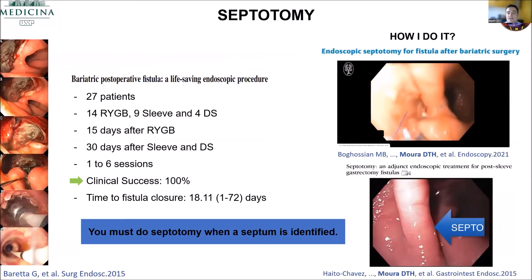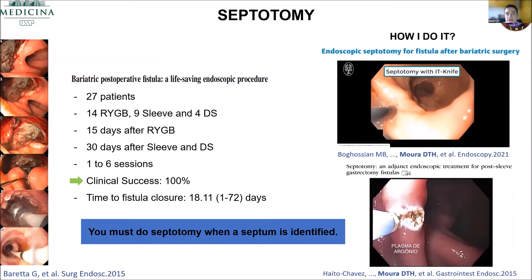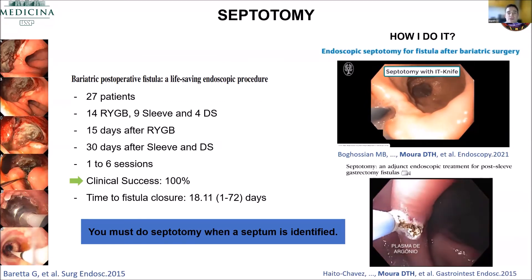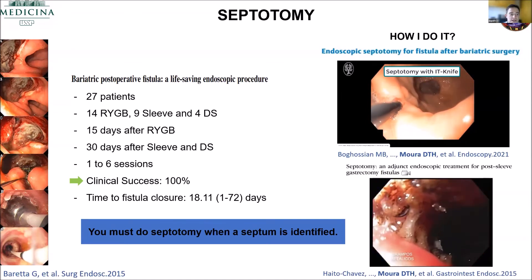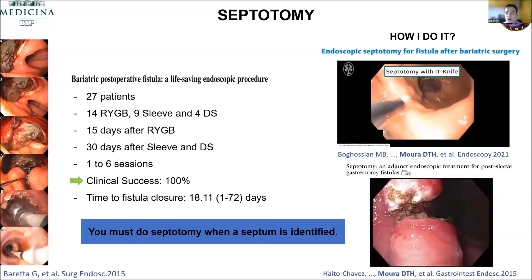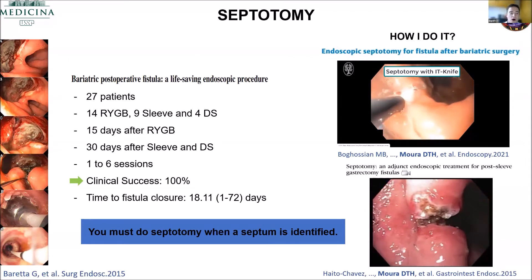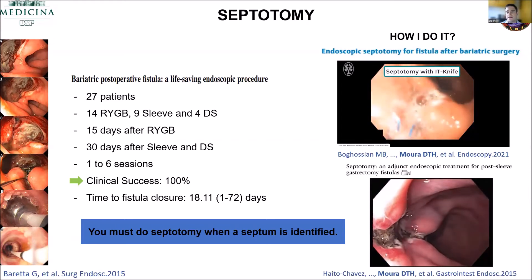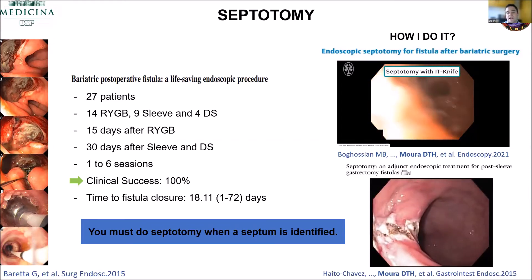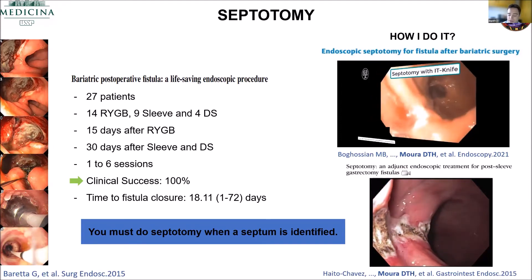Septotomy — this is very, very important to know. Always when you have a septum, you need to do the septotomy. Otherwise, you won't close the defect, or you will close it and it's going to reopen later. Always do the septotomy — it's a pretty easy technique and works very well. In sleeve cases, I always like to dilate the sleeve after the septotomy.